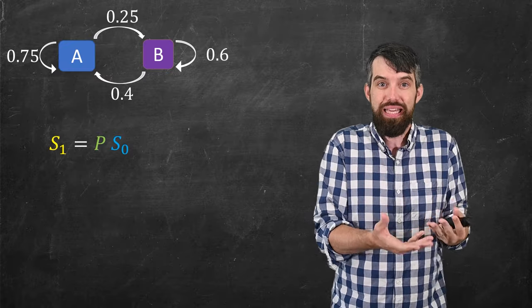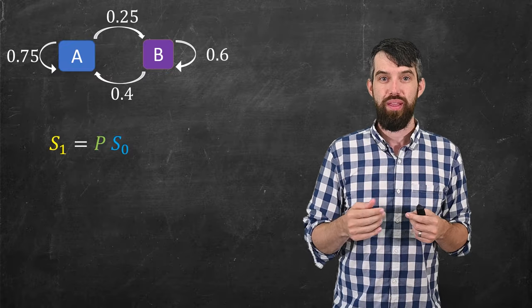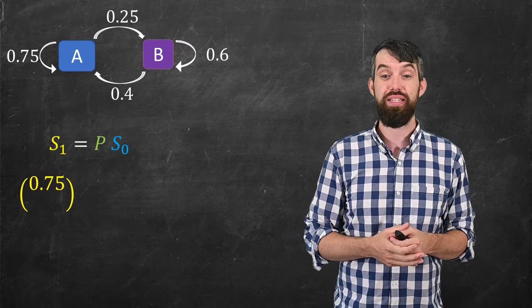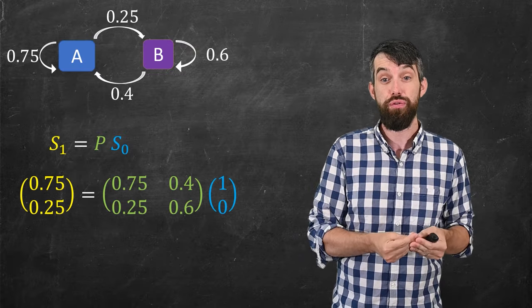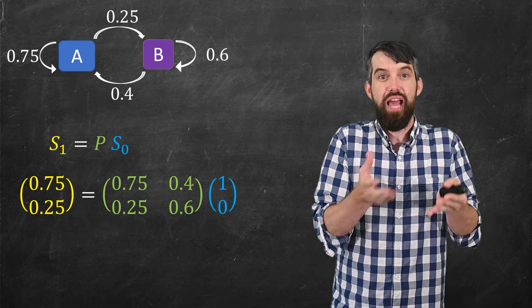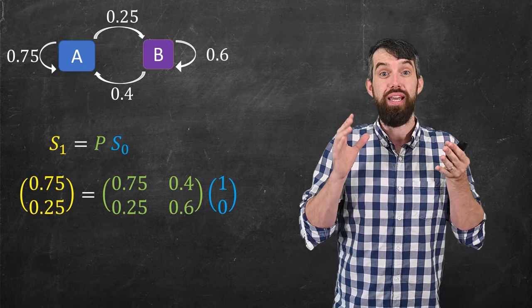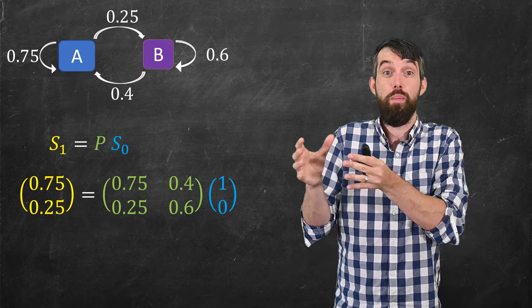In other words, S1 is P times S0. And if I want to write that out with the actual information, in this case, the S1 was the 0.75, 0.25, the P was that matrix, and the S0 was the 1, 0. This is matrix vector multiplication.